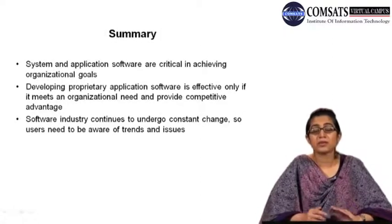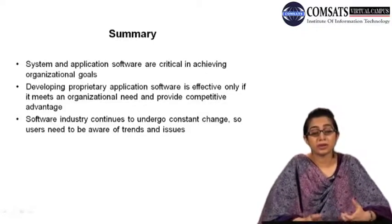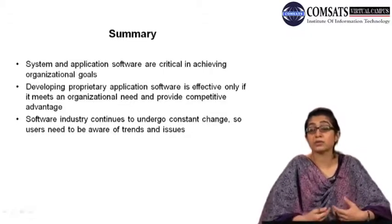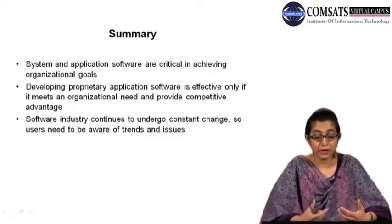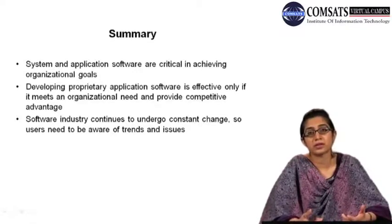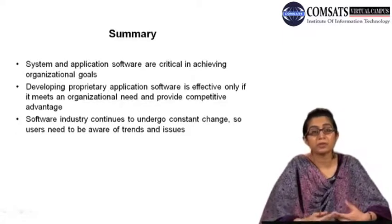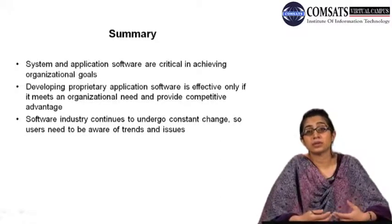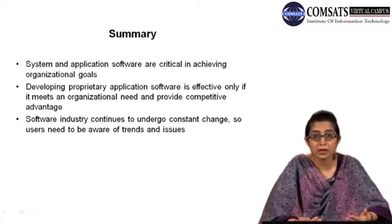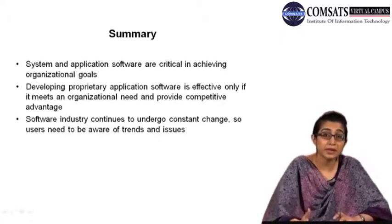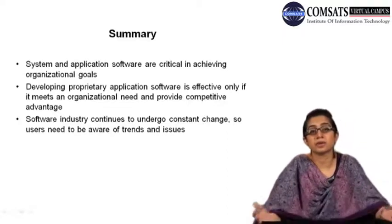Today we talked about the different kinds of software. Key points were that system and application software are critical in achieving organizational goals. When you are using different kinds of hardware, we said that input is really important in an information system, and the output is really important because you need to get the right information at the right time to the right people in the right format. To use these hardware devices and get the right information, there are system and application software working behind those hardware devices.